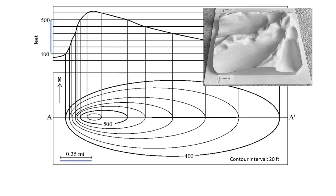We use topographic or bathymetric profiles to exaggerate the terrain and better see the slopes and shapes above or below sea level, turning our two-dimensional maps into more three-dimensional renderings.